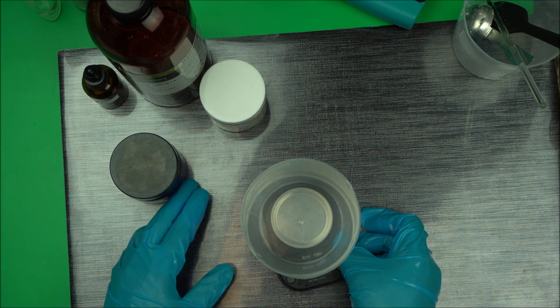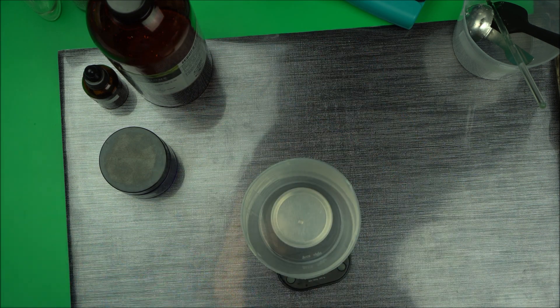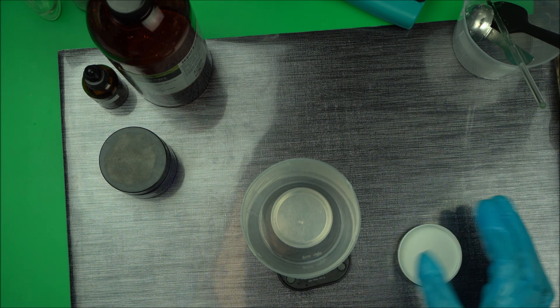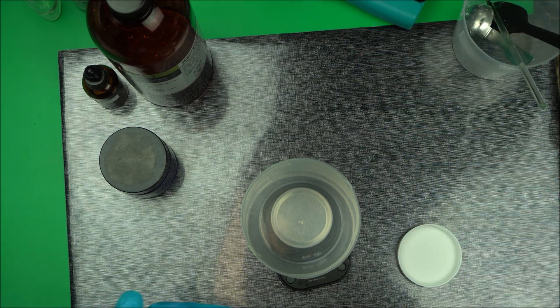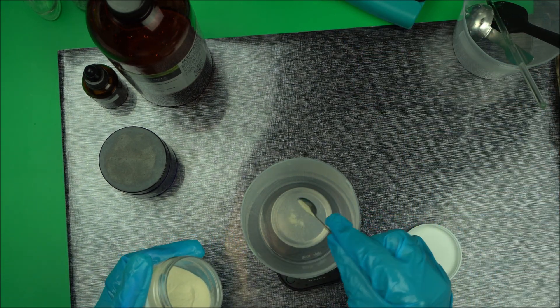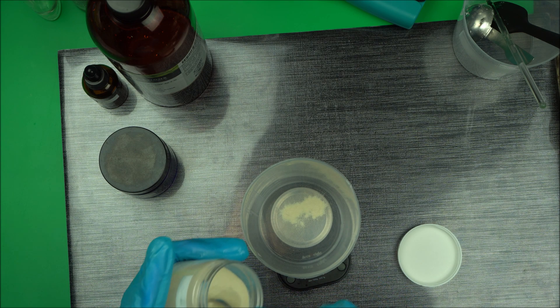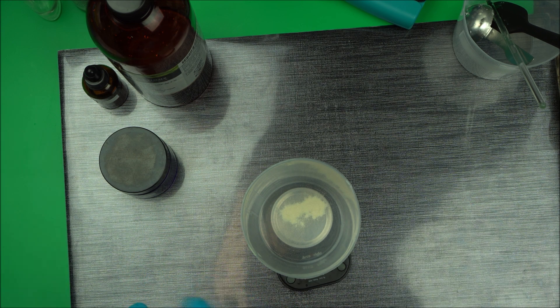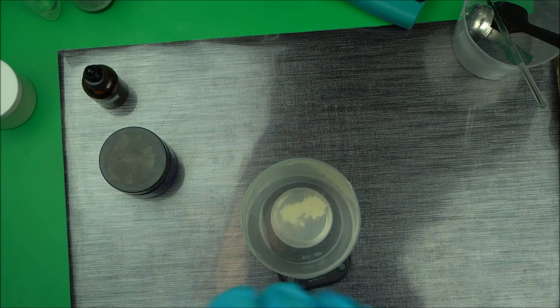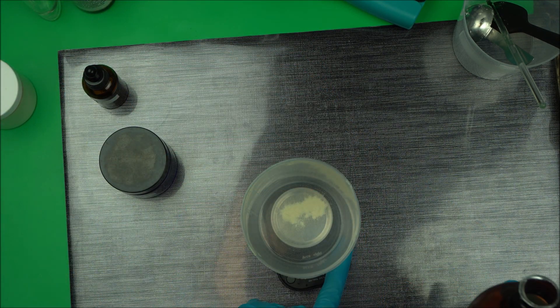The first thing you want to do when making a gel serum is to blend your xanthan gum with glycerin. I'm going to be using xanthan gum at 0.3 percent, so 0.3 grams of xanthan gum, and I'm going to add 3 grams of glycerin to that.